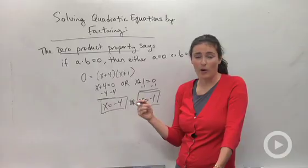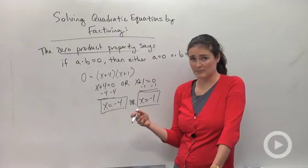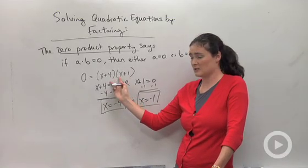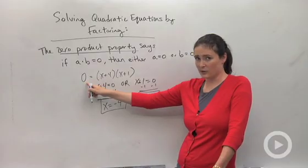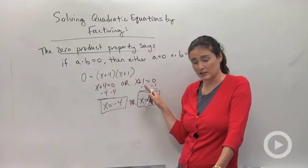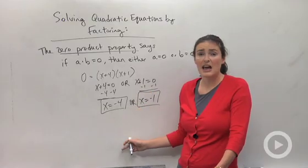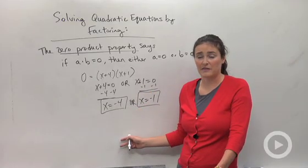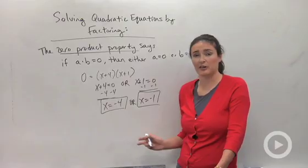This is how you're going to go about solving quadratic equations by factoring. First, get it into factored form, set it equal to zero, and then separate your two factors, make each factor equal to zero, and solve for x. This is really useful when you're trying to find the x-intercepts when you're graphing a parabola.